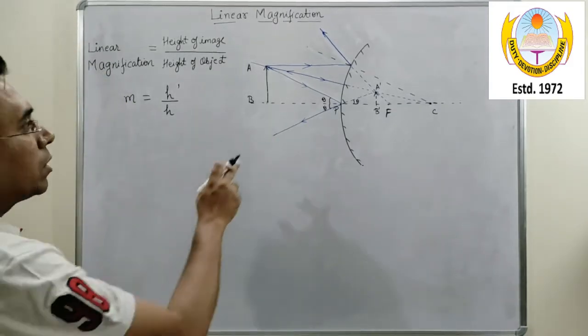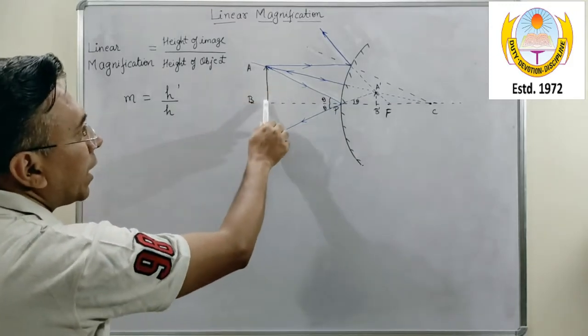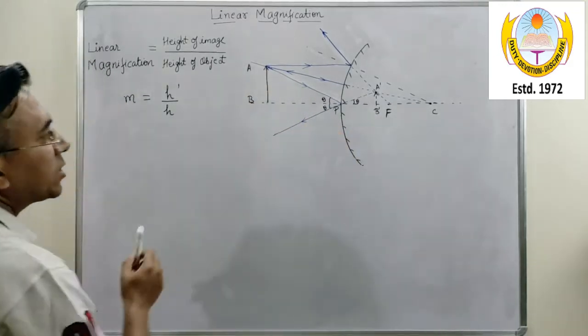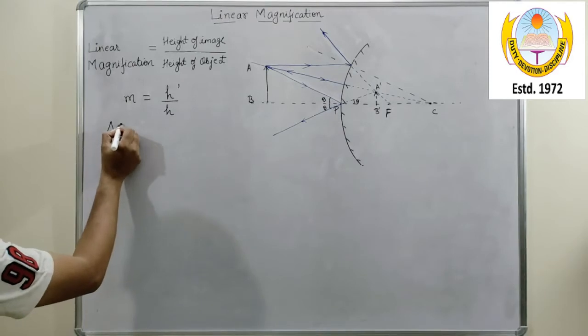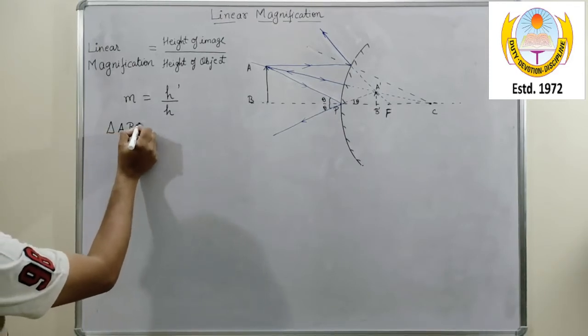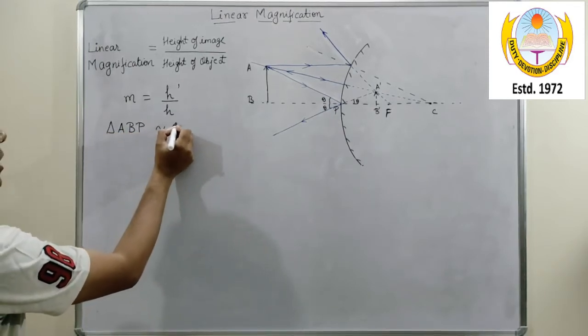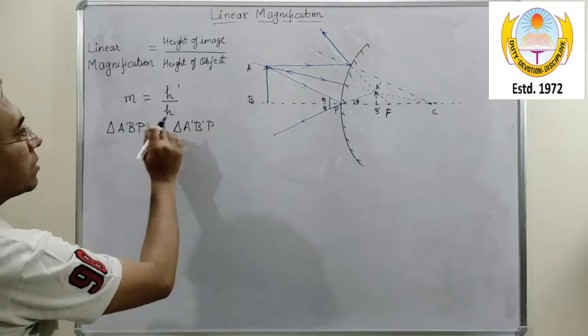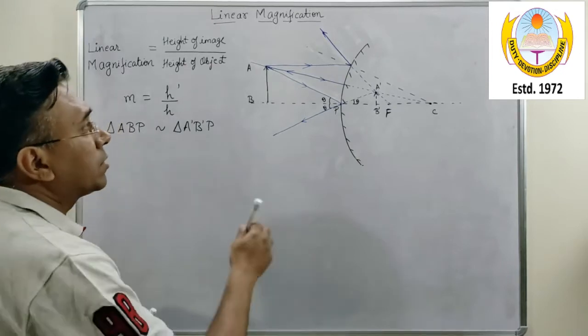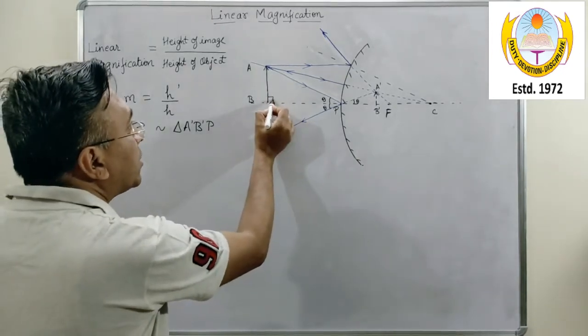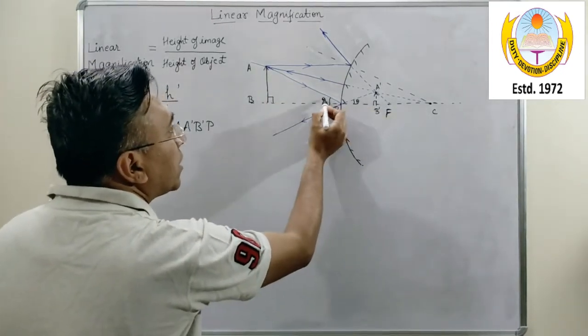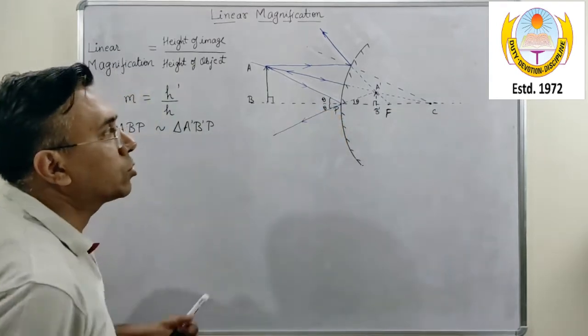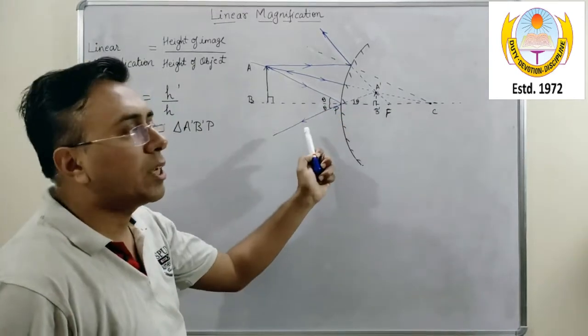Now, again if you see over here, ABP and A'B'P, these two triangles, triangle ABP and A'B'P, these are similar triangles. Since this angle is 90, this angle is 90, this angle equals to this, since I equals to R and these two are vertically opposite angles.